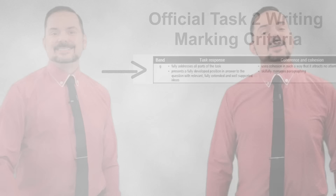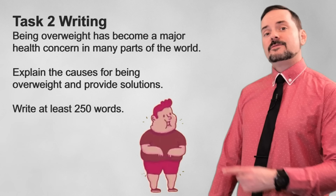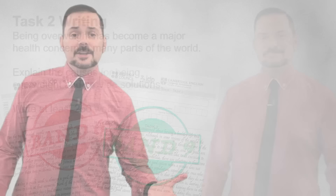To help explain this, let's take the example Task 2 question: 'Being overweight has become a major health concern in many parts of the world. Explain the causes for being overweight and provide solutions. Write at least 250 words.' Later in this video we'll take a look at a Band 6 and a Band 9 correction for this essay question. To understand the four marking criteria of the IELTS exam, we have to step back and first understand standard English essay writing practices.